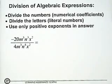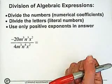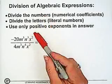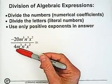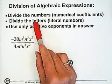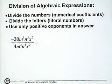Just a reminder that when we're working with dividing algebraic expressions, we divide the letters and the numbers. So here's our numbers: minus 20 and 4. We have to do that division and we also divide the letters. Typically we only have positive exponents in our answer, not negative exponents.